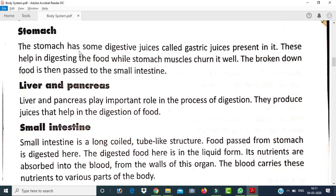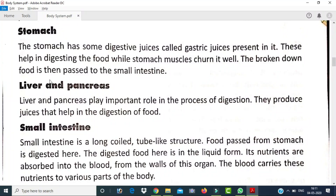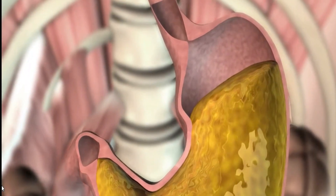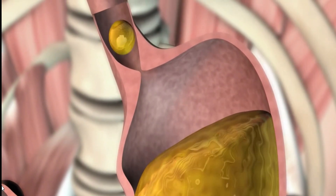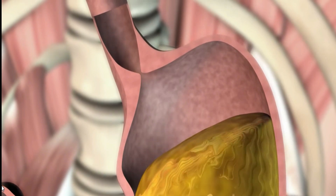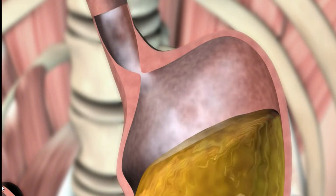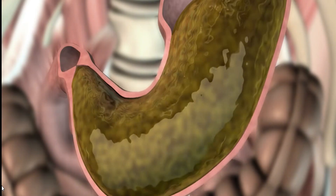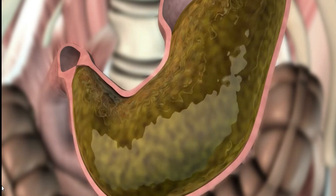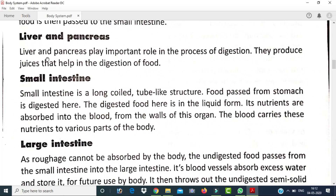The stomach has digestive juice called gastric juice, which helps in digestion. The stomach muscles churn the food well. The broken-down food is then passed to the small intestine. So food travels from the mouth, through the food pipe, into the stomach where gastric juices are mixed, and then on to the small intestine.